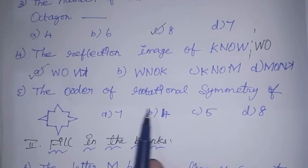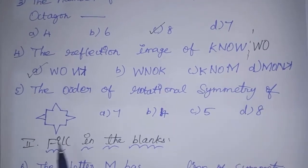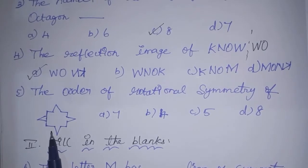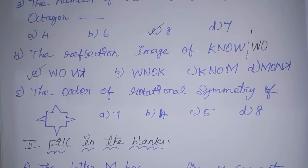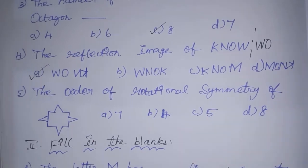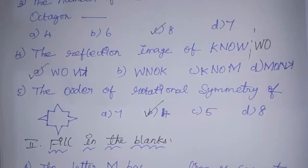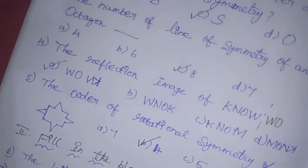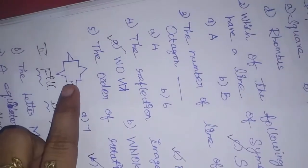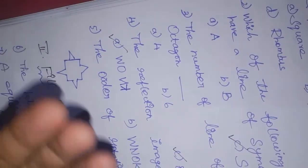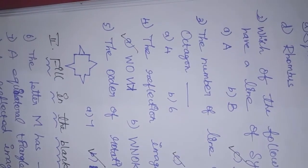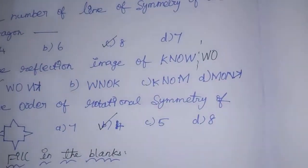Next, the order of rotational symmetry of the diagram. How much order is there in rotational symmetry? If you look at this, the order is 4. You rotate the diagram and it returns to the same position. So the answer is 4.